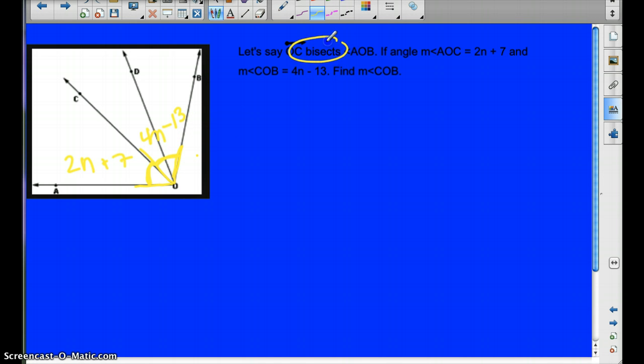Well, by the definition of bisector, we know that these two angles are congruent. And by the definition of congruent, we know that these two angles are equal. So we can set them equal and then solve for N. So I want you to go ahead and do that. I want you to go ahead and solve for N. Pause the video at this time.